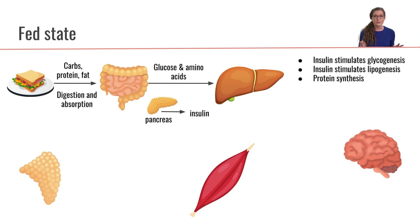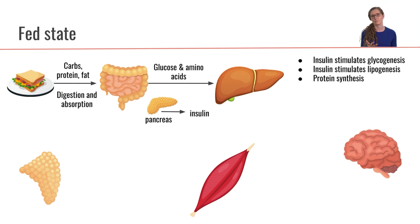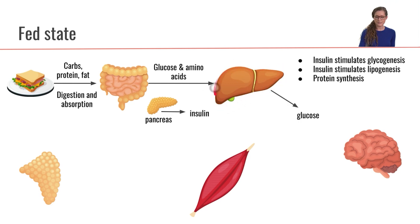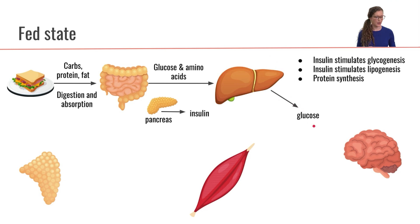Insulin is also going to stimulate protein synthesis. Insulin is an anabolic, or building, hormone. The liver is going to keep some of the glucose but then it's also going to send out a whole bunch of glucose to go around to the rest of the body.